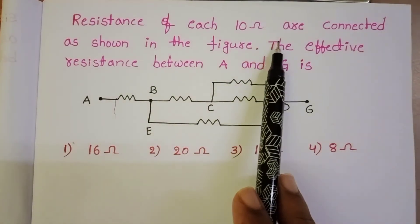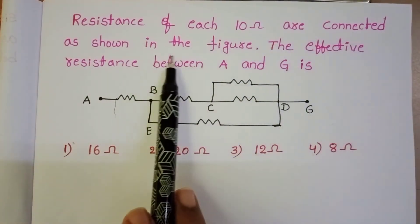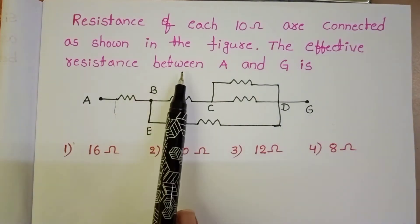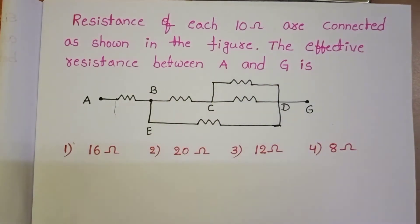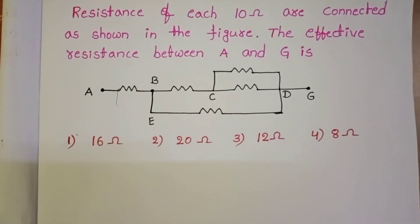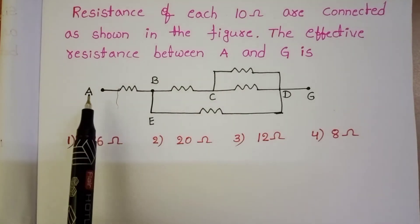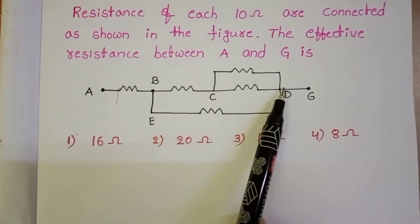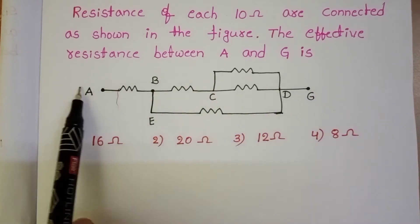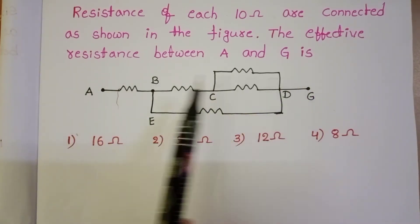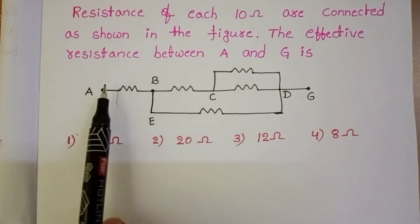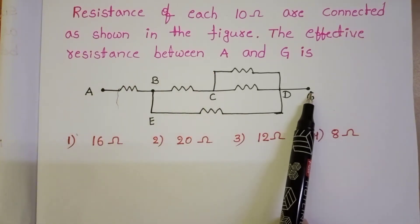Resistors of each 10 ohm are connected as shown in the figure. The effective resistance between A and G is to be found. Observe the given circuit — different points A, B, C, D, and G are marked. We have to find out the effective resistance between A and G.